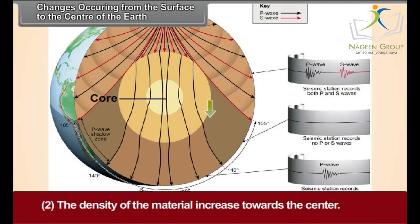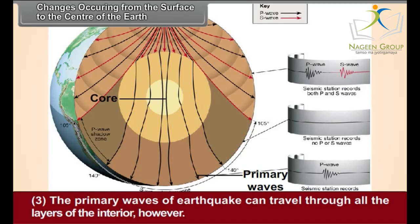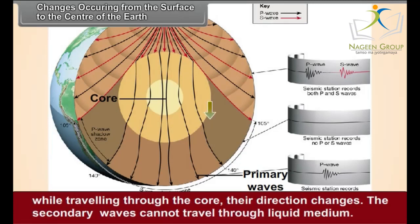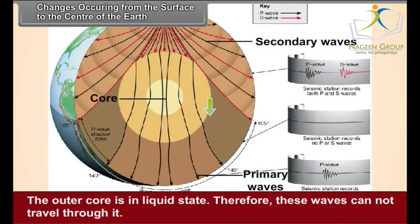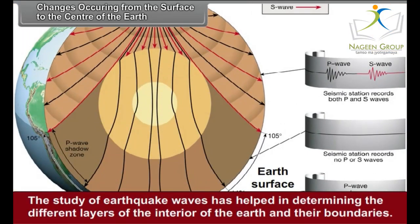Number 2: The density of the material increases towards the center. Number 3: The primary waves of an earthquake can travel through all the layers of the interior. However, while traveling through the core, their direction changes. The secondary waves cannot travel through a liquid medium. The outer core is in a liquid state; therefore, these waves cannot travel through it. The study of earthquake waves has helped in determining the different layers of the interior of the Earth and their boundaries.